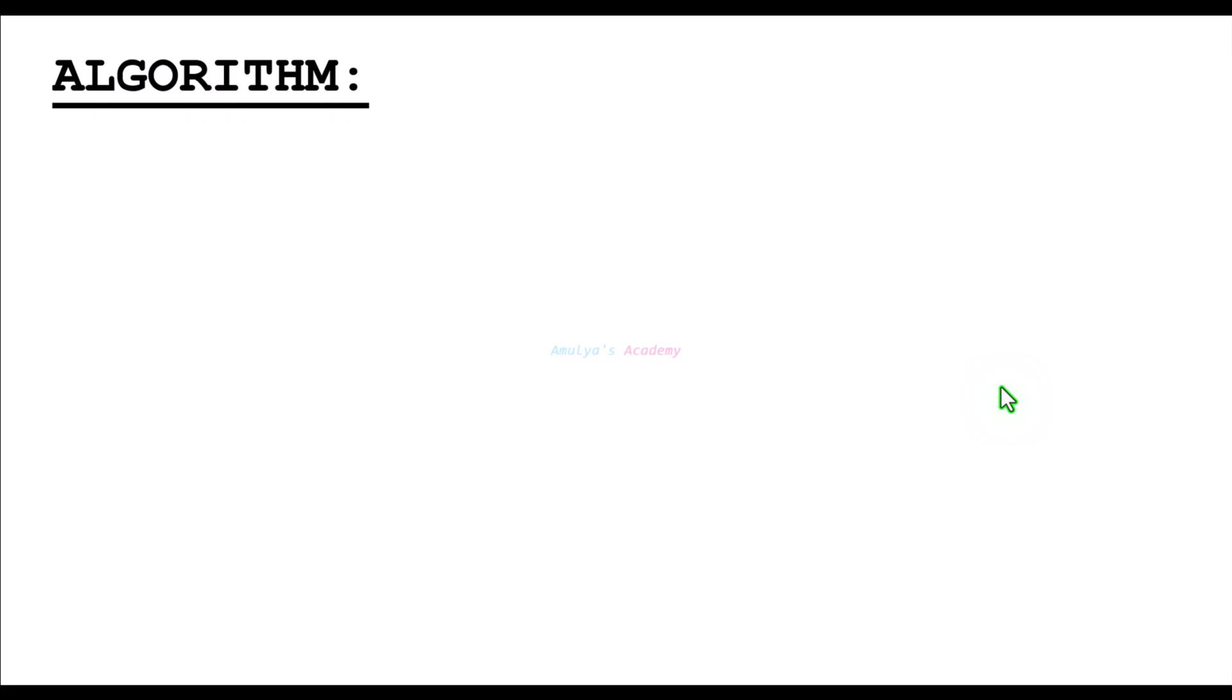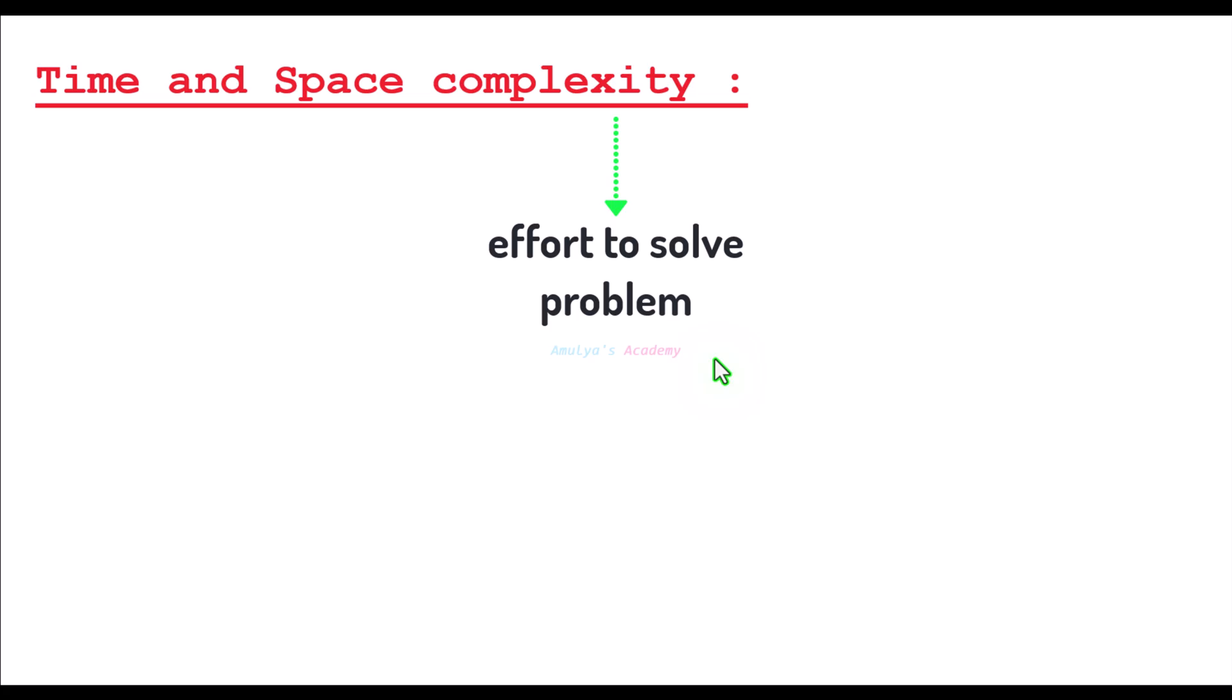One way is by looking at its time and space complexity. So today's topic is time and space complexity. These are two key ways we measure how efficient an algorithm is. Here, complexity is a term from theoretical computer science that captures the effort required to solve a problem. Time complexity means effort in time. Space complexity means effort in memory.